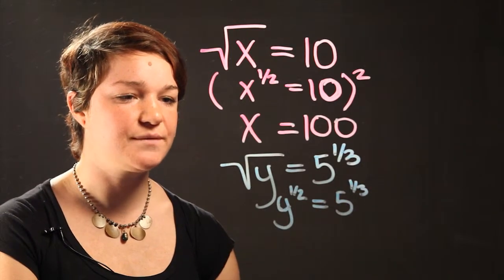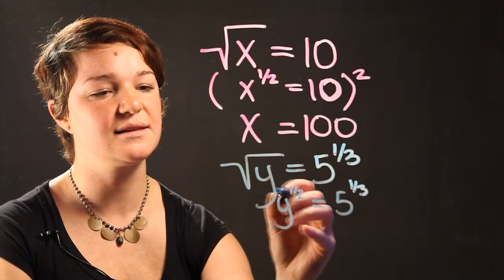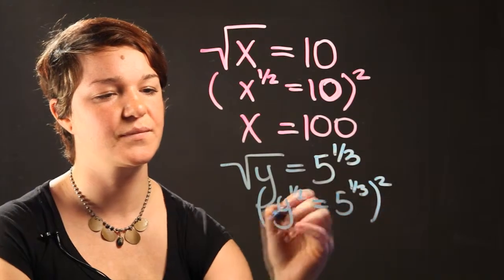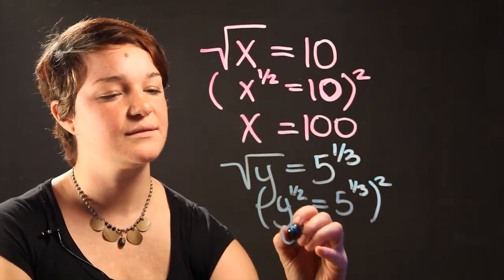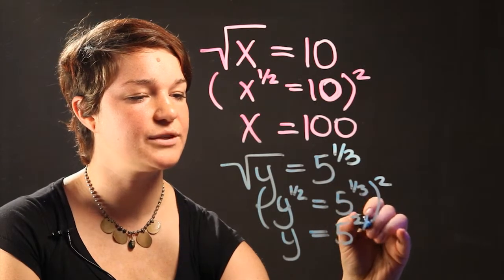In order to solve this equation, all you have to do is once again square both sides of the equation, and you get y is equal to 5 to the power of 2 thirds.